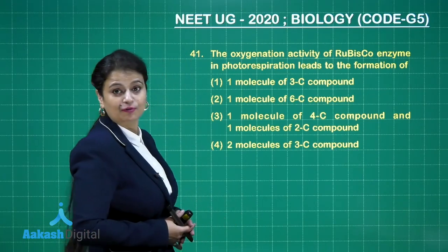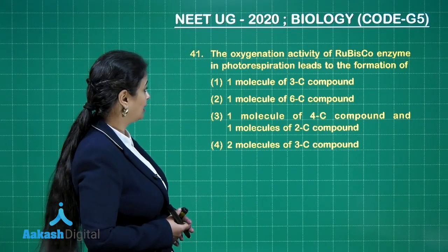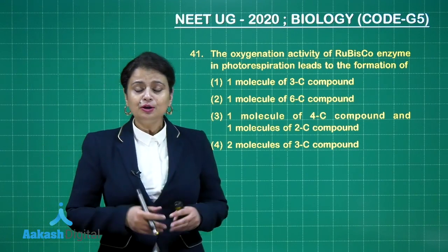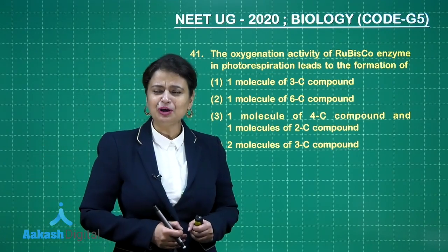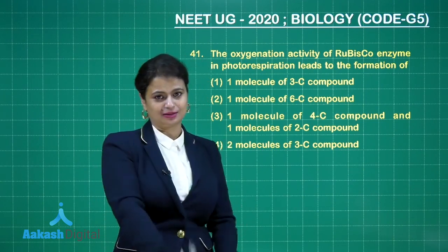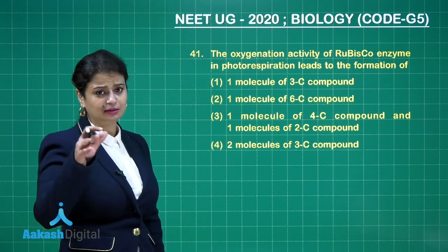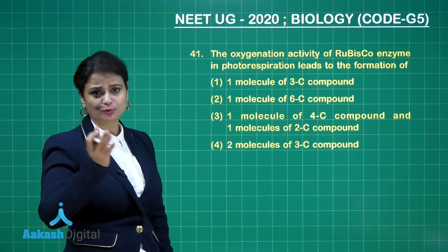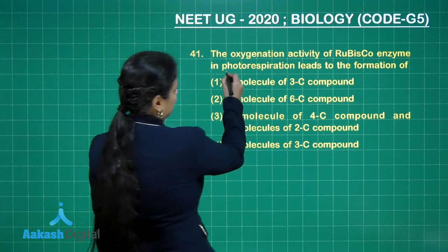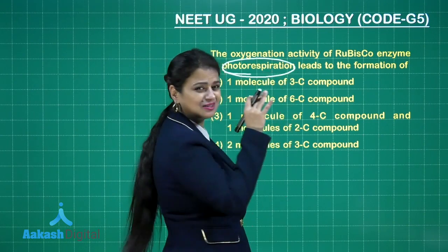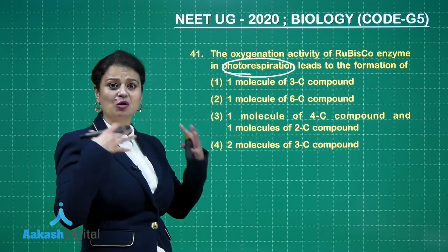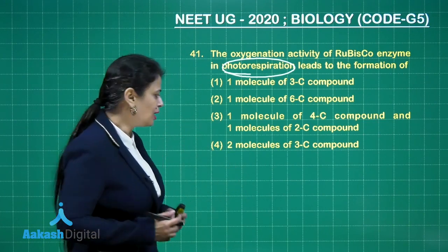The oxygenation activity of RuBisCO enzyme in photorespiration — why do we call it RuBisCO? Because it has both carboxylase and oxygenase activity, meaning it can interact with carbon dioxide as well as oxygen. When we talk about photorespiration, it is not the carboxylase activity but the oxygenase activity that is relevant.